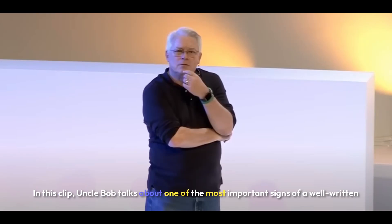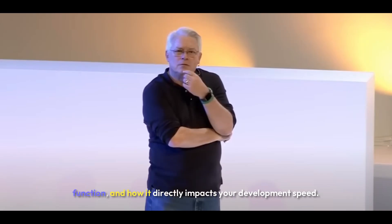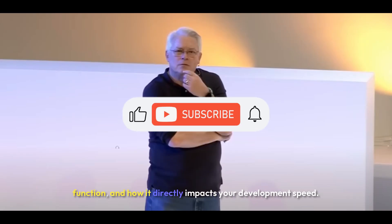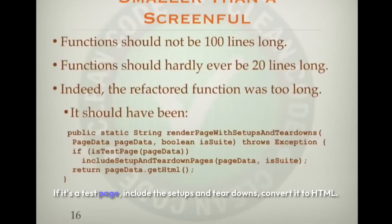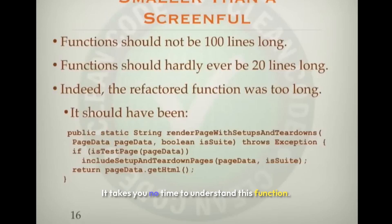In this clip, Uncle Bob talks about one of the most important signs of a well-written function, and how it directly impacts your development speed. Render page with setups and teardowns. If it's a test page, include the setups and teardowns. Convert it to HTML. It takes you no time to understand this function.